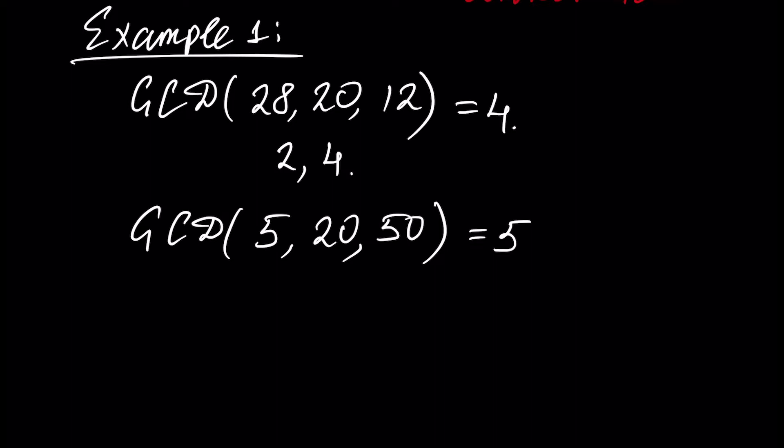For small numbers we can find the GCD just by inspection, but for big numbers we have to use prime number factorization. Watch our previous tutorials to understand what prime number factorization is. We can say that GCD will be the multiplication of all common prime factors with the smallest exponent in each factorization.